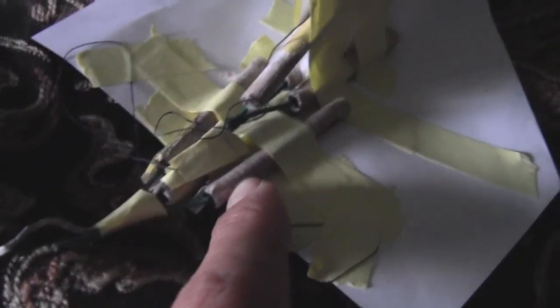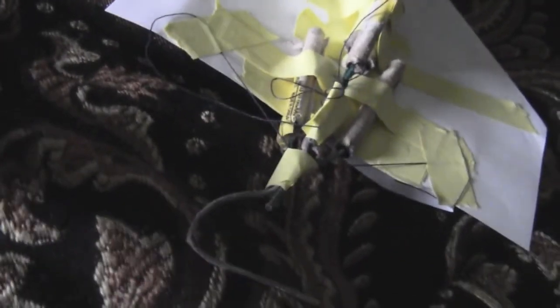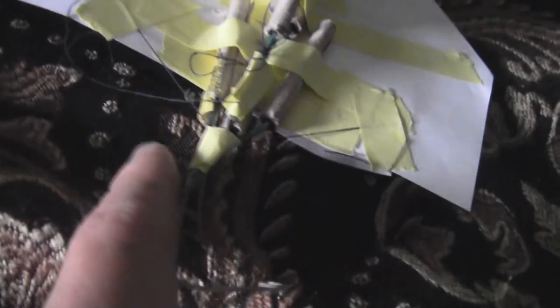Alright, this thing kind of looks rough, but here are the six bottle rockets all connected together. All the fuses are tied together with this black string right here. It's all connected to one long fuse. I got the string from a brick of firecrackers that they used to tie it all together, so this is what I used to tie the fuses together.